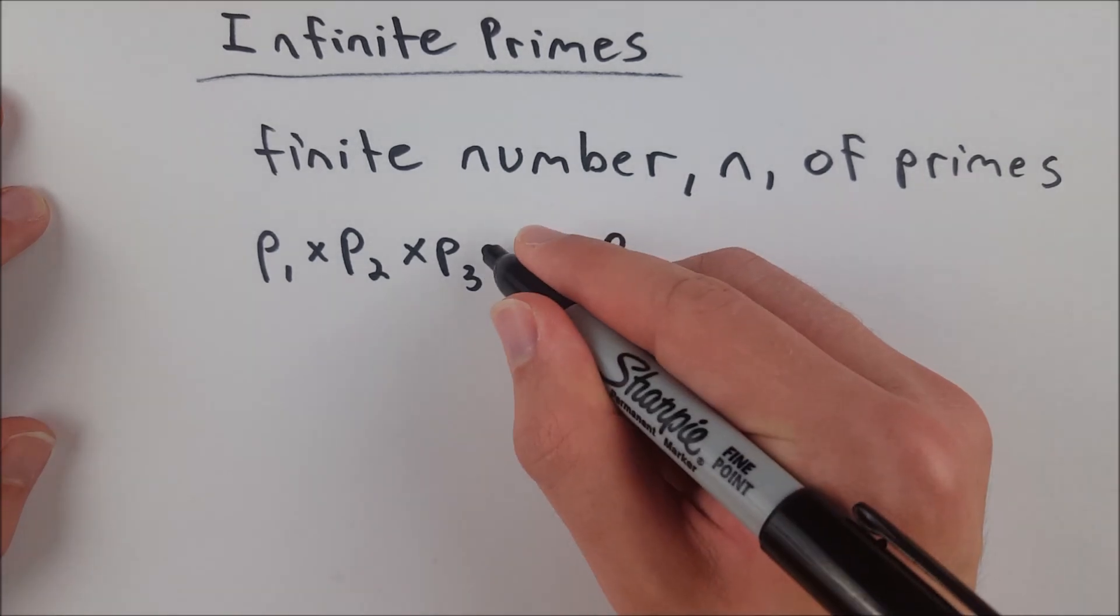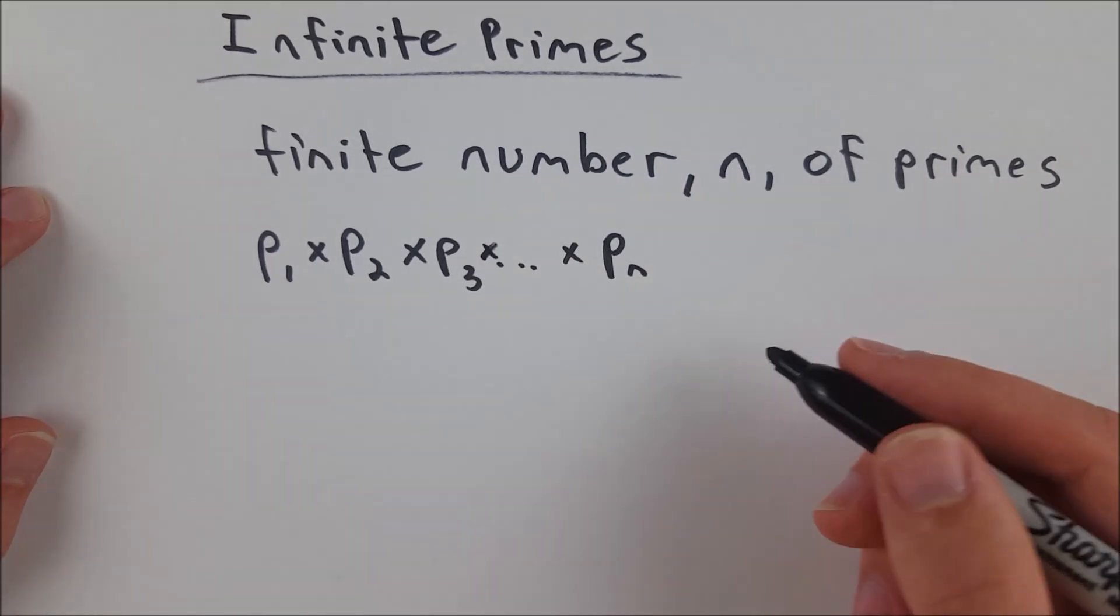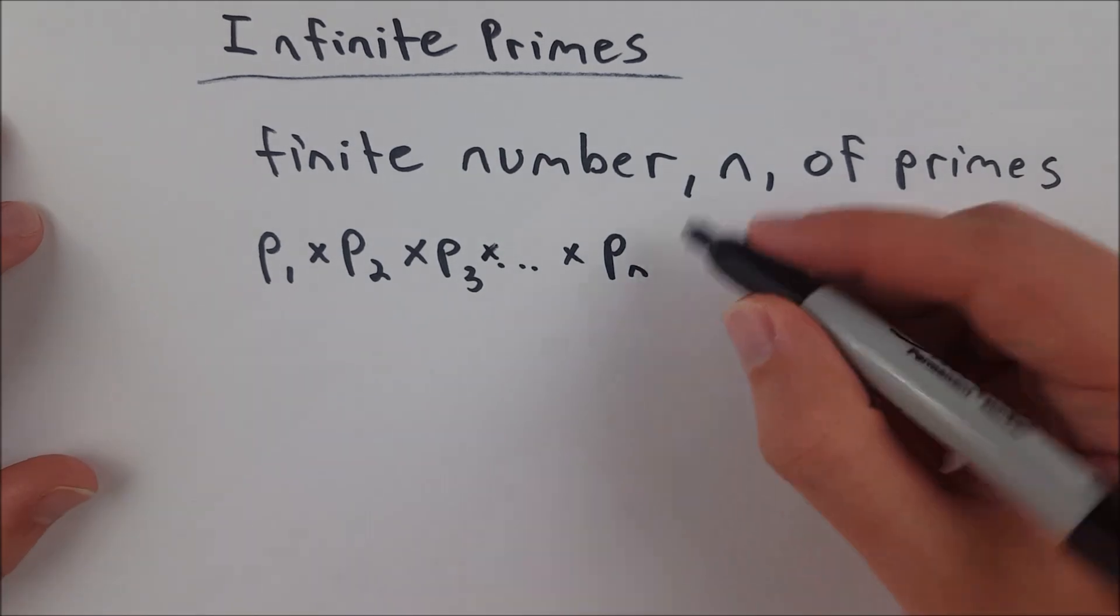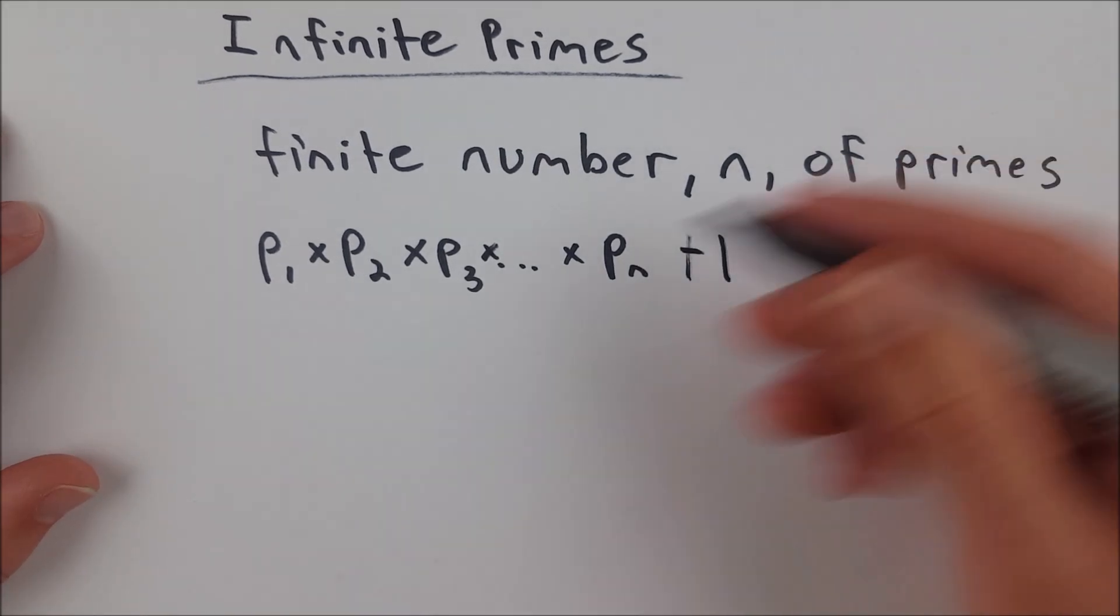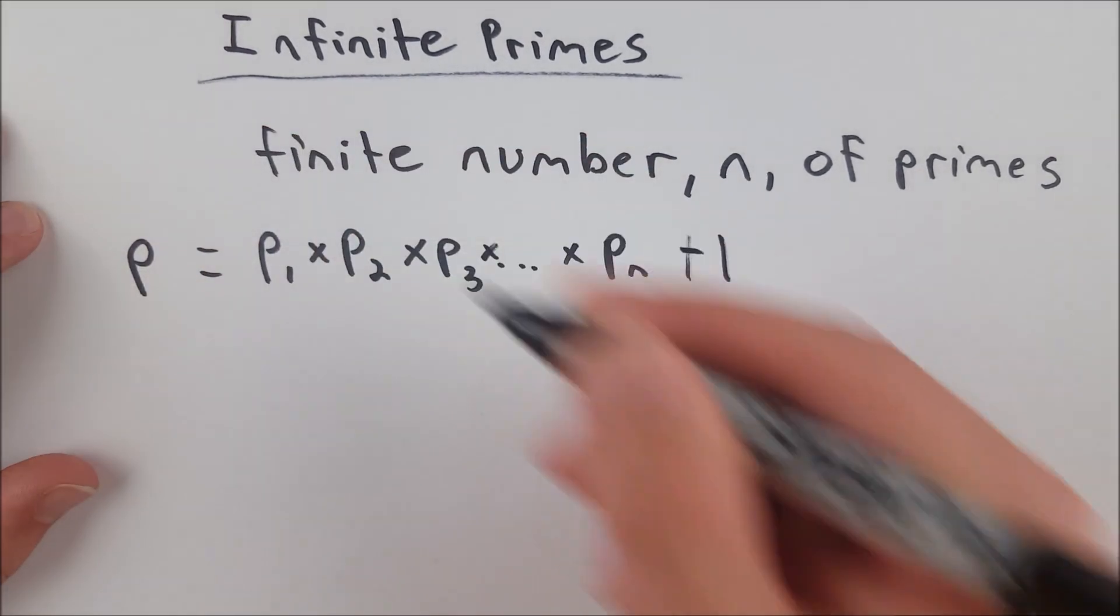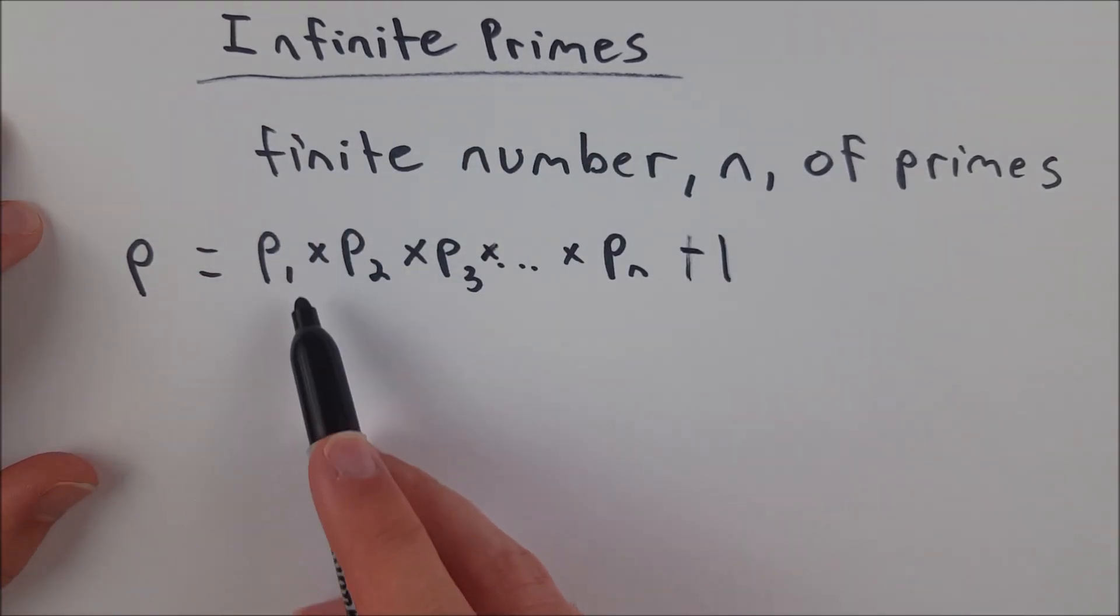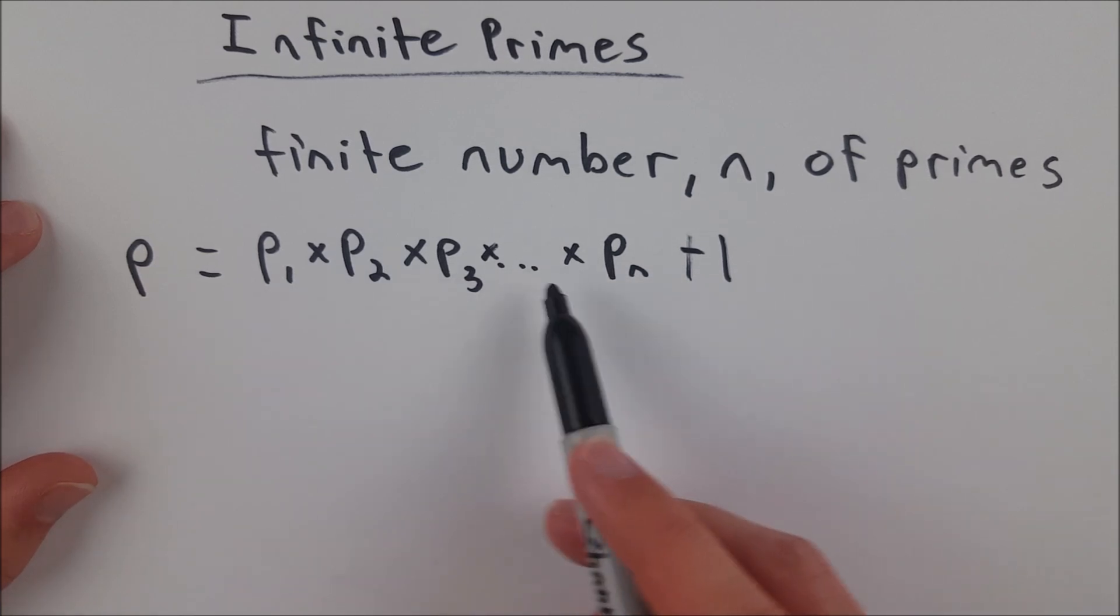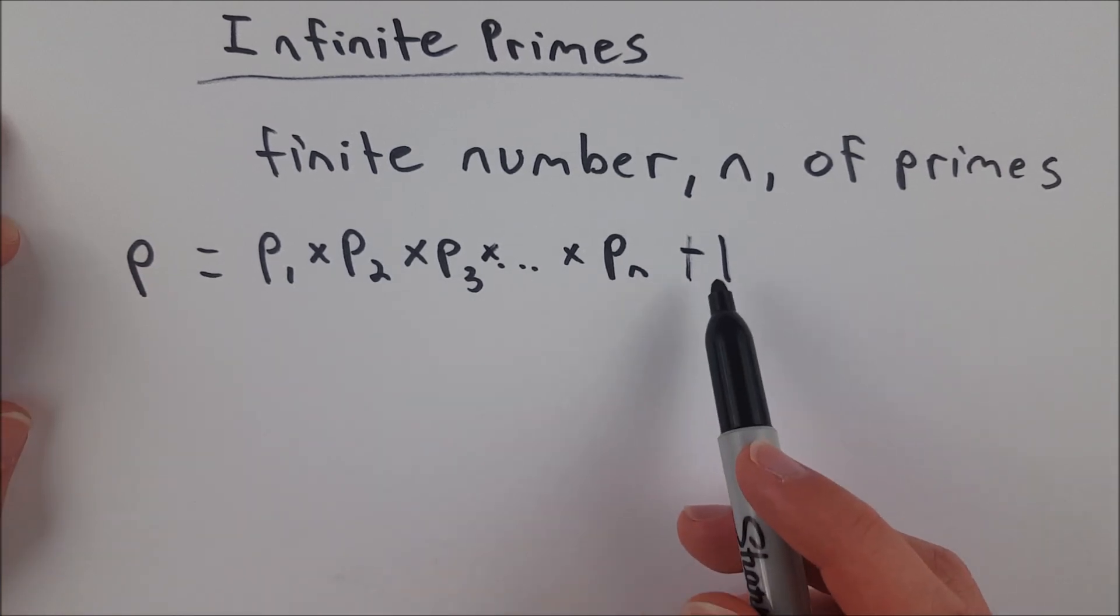So we are multiplying all primes together. I'll put a little multiplication symbol there too. We're going to take this number and add 1 to it, and we're going to say that this number is equal to P. So P is equal to the product of all of our primes, some finite number n of primes, plus 1.